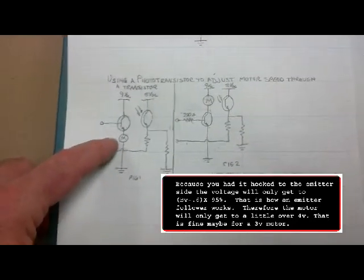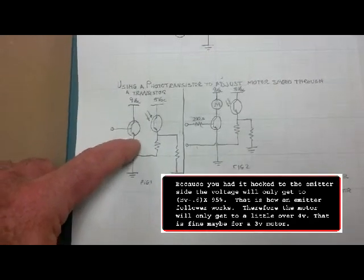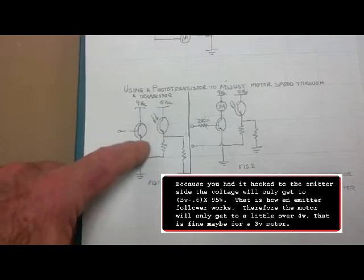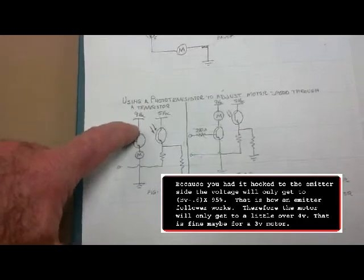This one, I had the motor hooked to the emitter side of the transistor, and while it worked as a speed controller, I never got the maximum amount of current because I was hooked to the emitter side. I should have been hooked on the collector side.